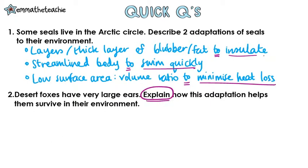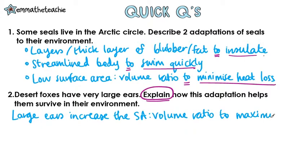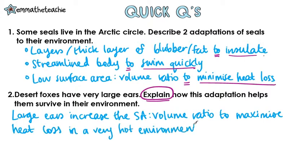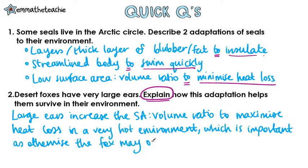Question two: desert foxes have large ears — explain how this adaptation helps them to survive in their environment. Large ears will increase the surface area to volume ratio to maximize heat loss in a very hot environment. This is important, otherwise the fox may actually overheat. And again, here is where I've started my explanation, so that's a good way to do it.